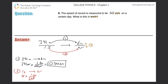The seconds cancel, leaving minutes. Now I need to get rid of minutes, so they go in the denominator and hours go in the numerator. In one hour there are 60 minutes, so the minutes cancel, leaving hours. That means I take one and divide it by 60 times 60, which comes out to approximately 2.78 times 10 to the minus 4 hours. That's the answer to step two.